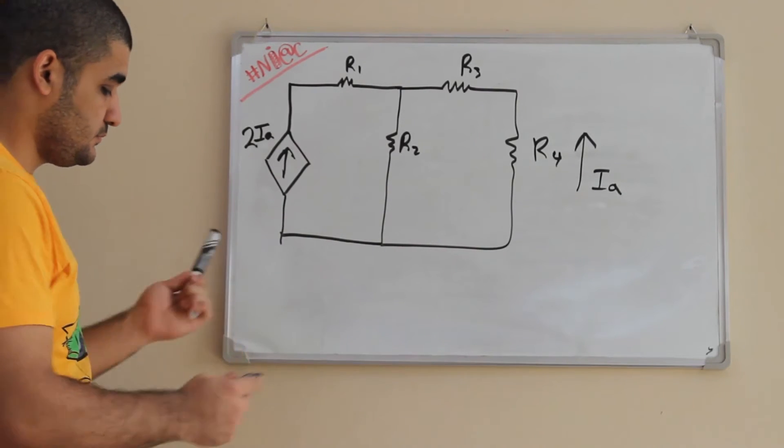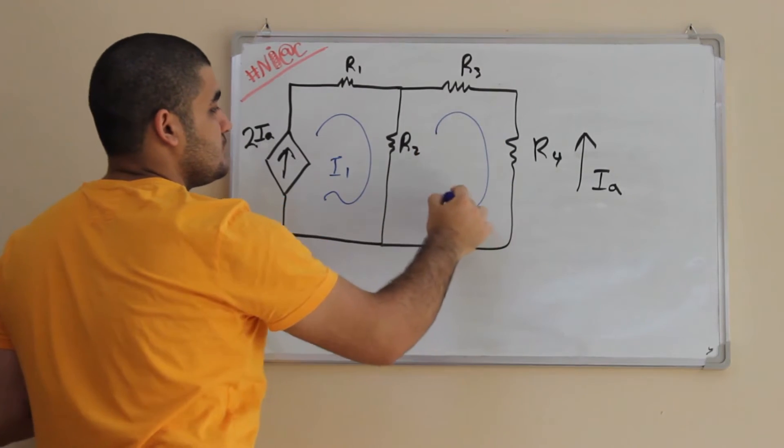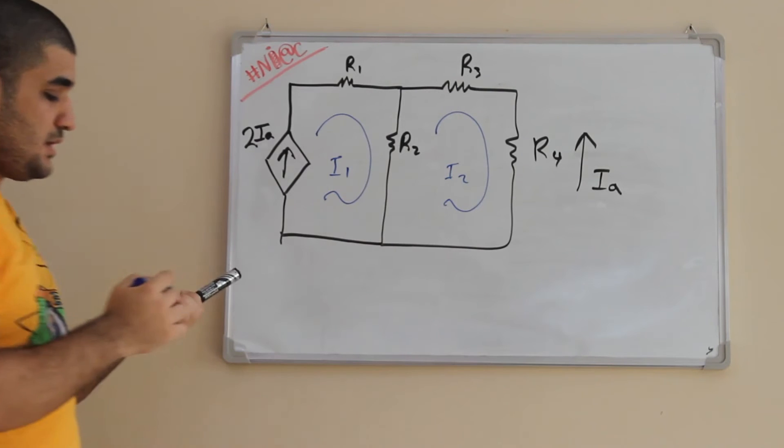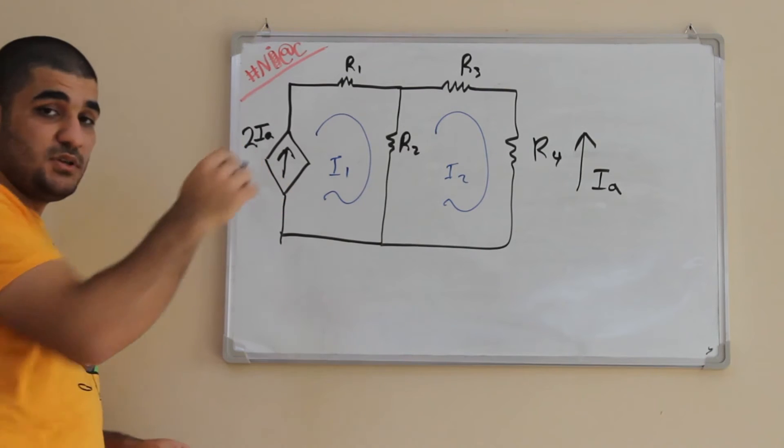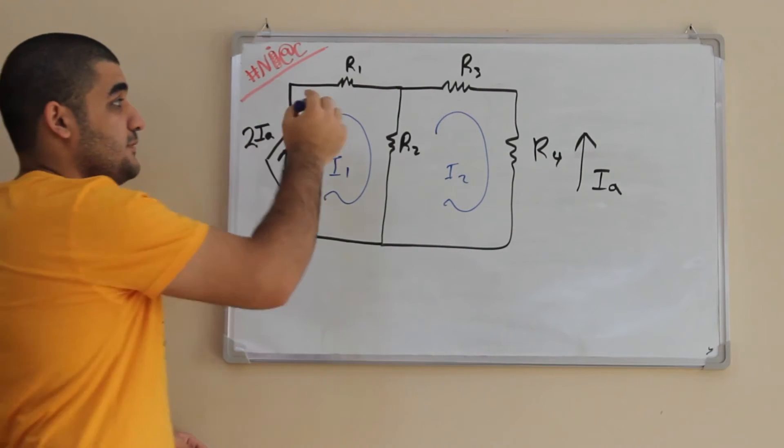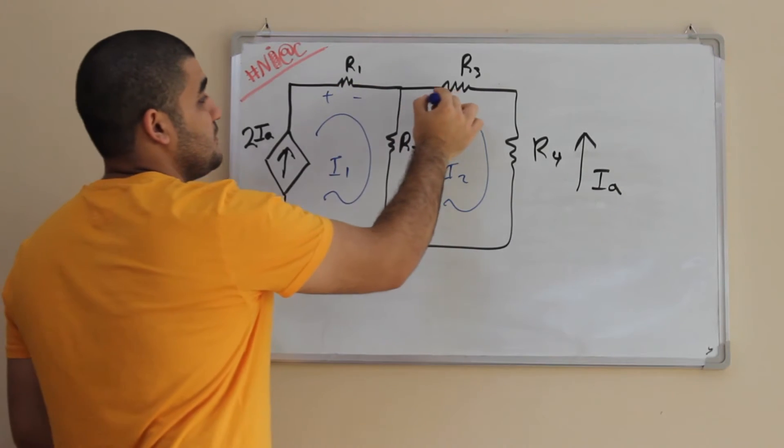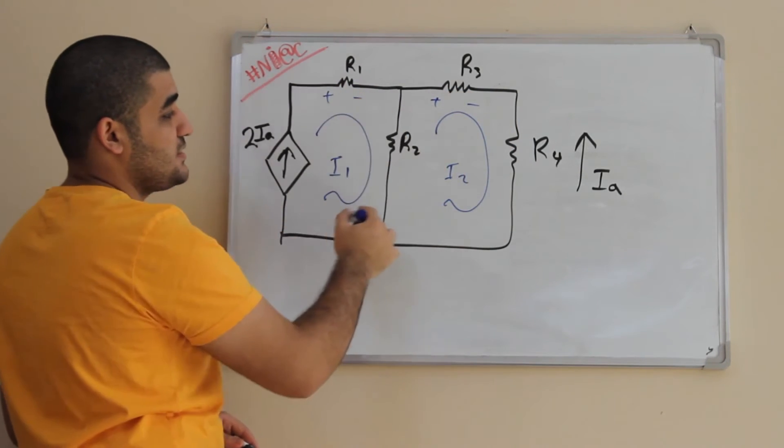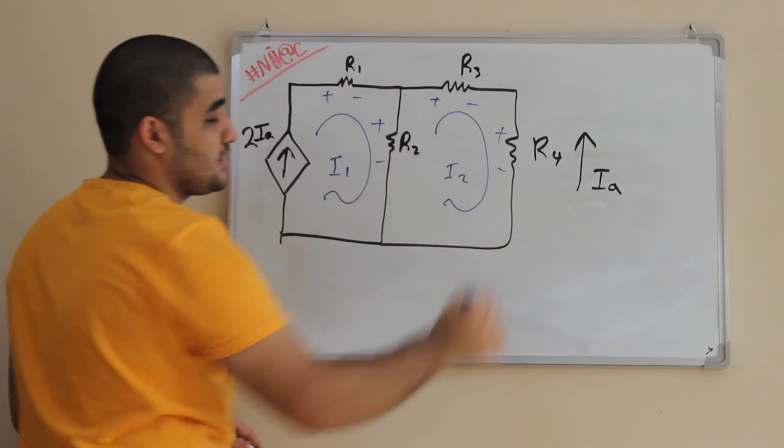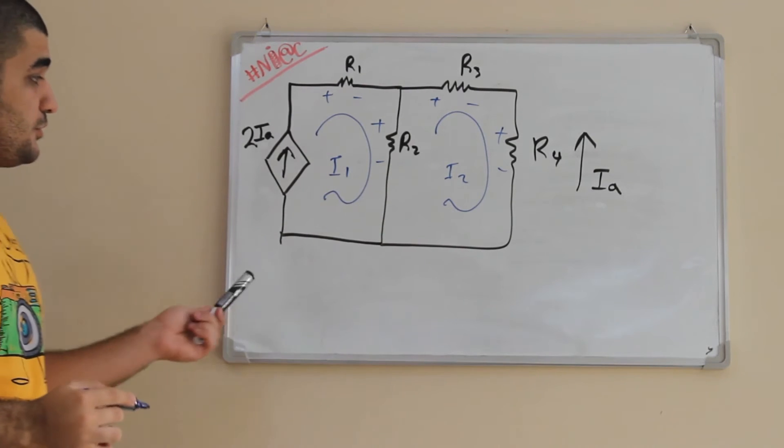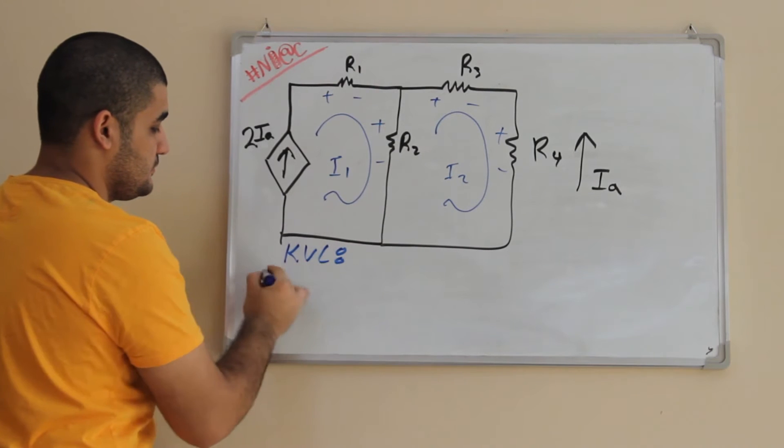The same, we put our mesh. This is I1. This is I2. Now the difference here is we put the mesh. Step 2, defining the signs over the component. So plus, minus, plus, minus. Now we write our equations, the KVL equations.